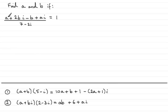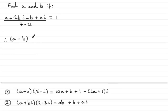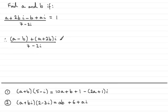On the top we've got a minus b, so we'll put a minus b as the real part in brackets. And for the imaginary part, we've got ai and 2bi, so we put plus, in brackets, a plus 2b — that's the imaginary part. And it's all divided by 7 minus 2i, and it equals 1.